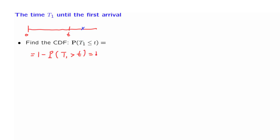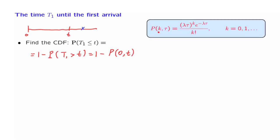The probability of 0 arrivals in a time interval of length t is something for which we already have a formula. We take that formula and replace k by 0 and tau by t. When k equals 0, the power term equals 1, and using the convention that 0 factorial equals 1, we're left with e to the minus lambda t. This is the answer for the CDF of the time until the first arrival.